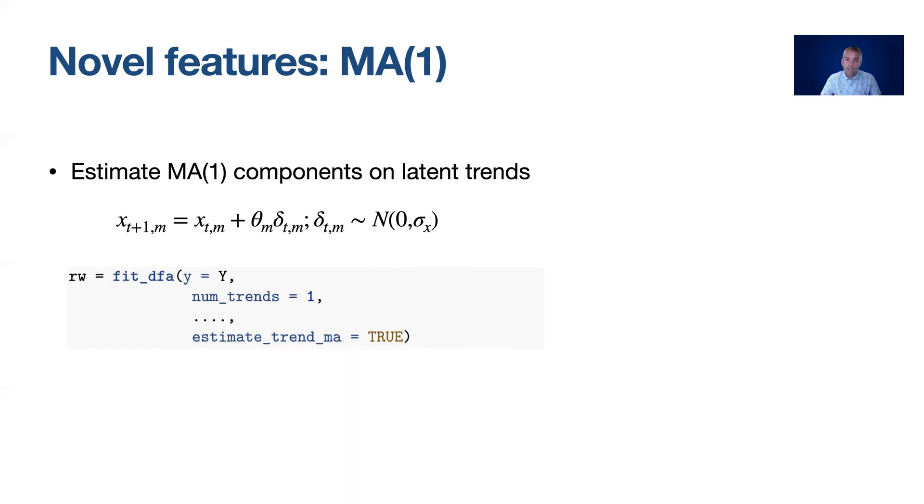Just like with AR processes we can include moving average processes which I've added here with the theta_m. Each trend here gets its own underlying theta value and we can turn those on and off again with the estimate_trend_MA argument.